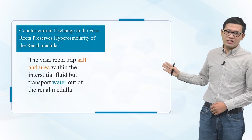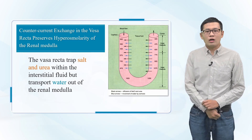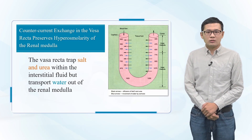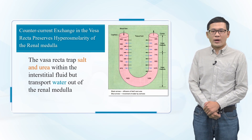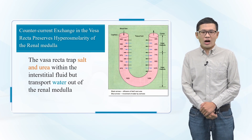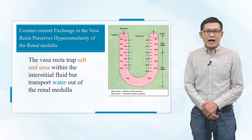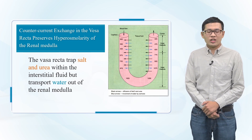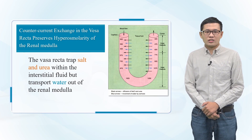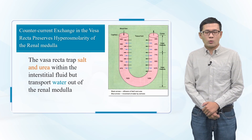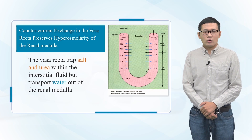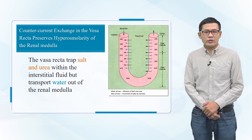Countercurrent exchange in the vasa recta preserves the hyperosmolality of the renal medulla. Plasma flows down the descending limb of the vasa recta and becomes more hyperosmotic, because of diffusion of water out of the blood and diffusion of solutes from the renal interstitial fluid into the blood. In the ascending limb of the vasa recta, solutes diffuse back into the interstitial fluid and water diffuses back into the vasa recta. Large amounts of solutes could be lost from the renal medulla without the U-shape of vasa recta capillaries.